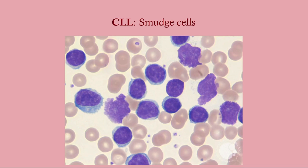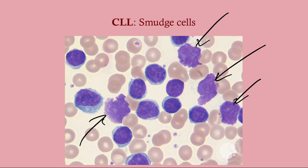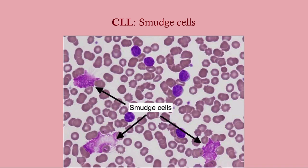These are smudge cells — they just look like squashed cells, like if you were to step on one of these lymphocytes. Note these are different from atypical lymphocytes.